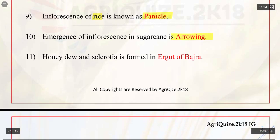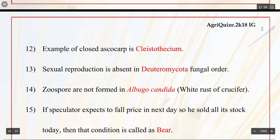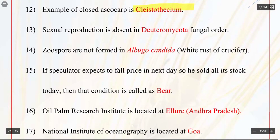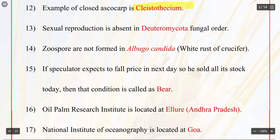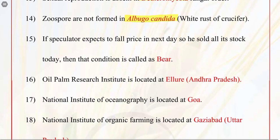Q11. Honeydew and sclerotia is formed in ergot of bajra. Q12. Example of closed ascocarp is cleistothecium. Q13. Sexual reproduction is absent in deuteromycota fungal order. Q14. Zoospores are not formed in Albugo candida, white rust of crucifer. Q15. If a speculator expects price to fall the next day and sells all his stocks today, that condition is called as BIO.